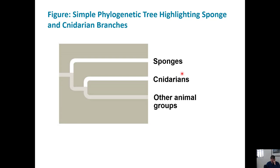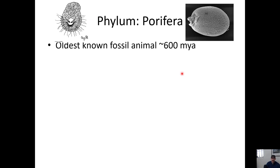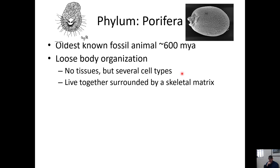We're going to start at the base of the animal cladogram. We're going to start with the Porifera — the sponges — and the cnidarians. These are the simplest animals on the cladogram. Phylum Porifera is the oldest known fossil animal, showing up around 600 million years ago, give or take. It has a loose body organization.